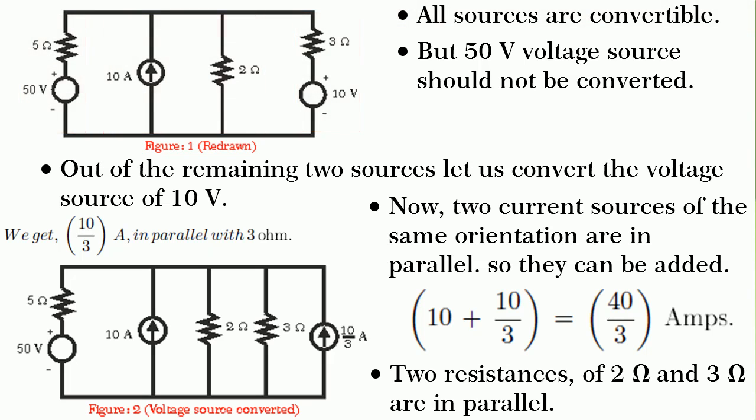You must know that 50 volts source should not be converted because we are required to find power delivered by it. Therefore, you know that power delivered by a voltage source is equal to V into I. Therefore, out of the remaining two sources, I prefer to convert 10 volt source into a current source so that I get two parallel connected current sources.